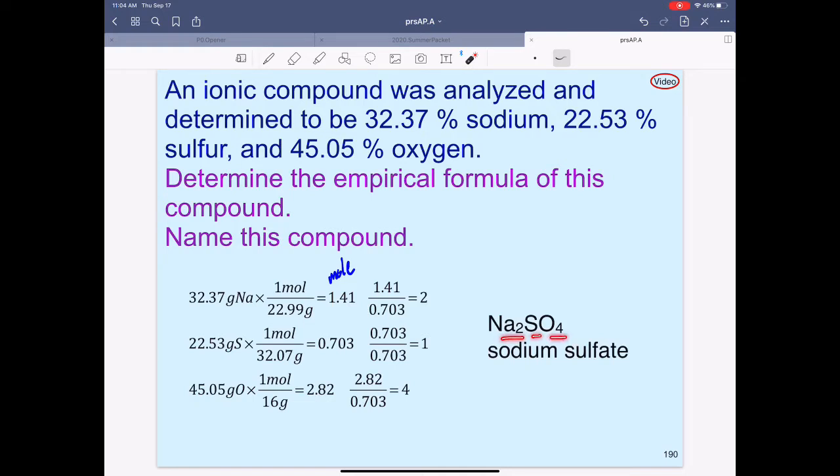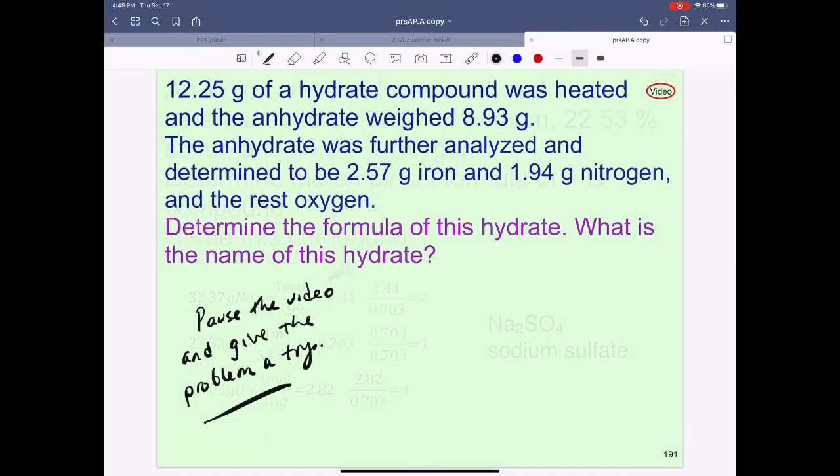...we end up with two sodium, one sulfur, four oxygens, which, of course, we will name sodium sulfate. Okay, here we have a hydrate problem, and hopefully you remember something about hydrates and realize that we are looking for an anhydrate that contains iron, nitrogen, and oxygen, and then we're wondering how much water is attached to this.